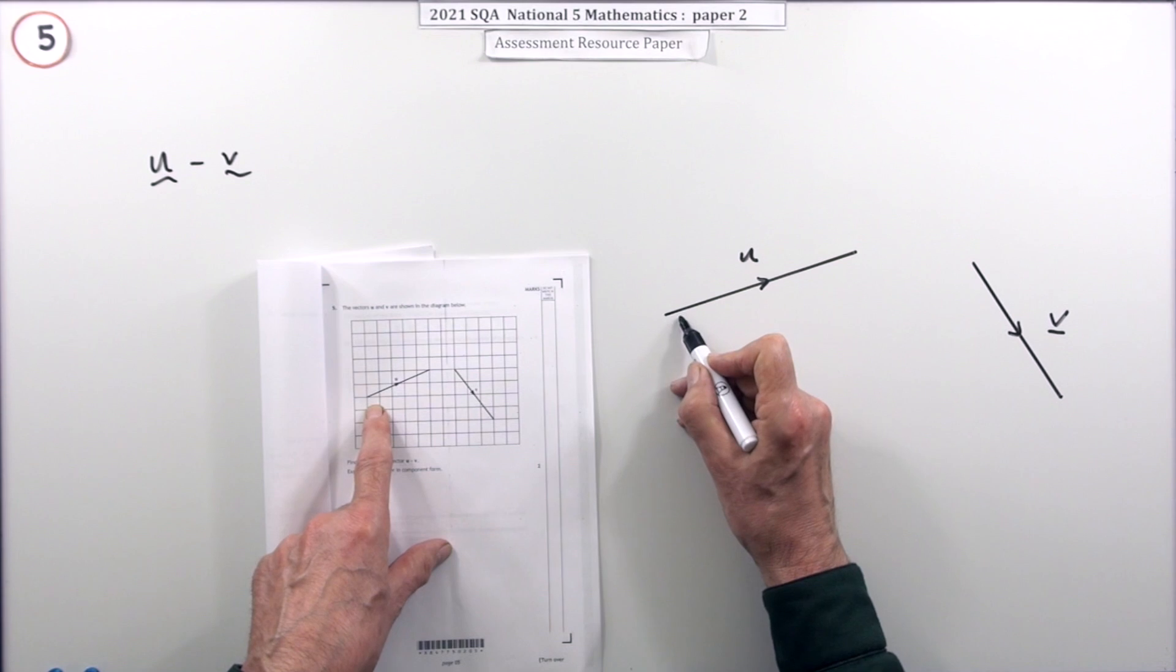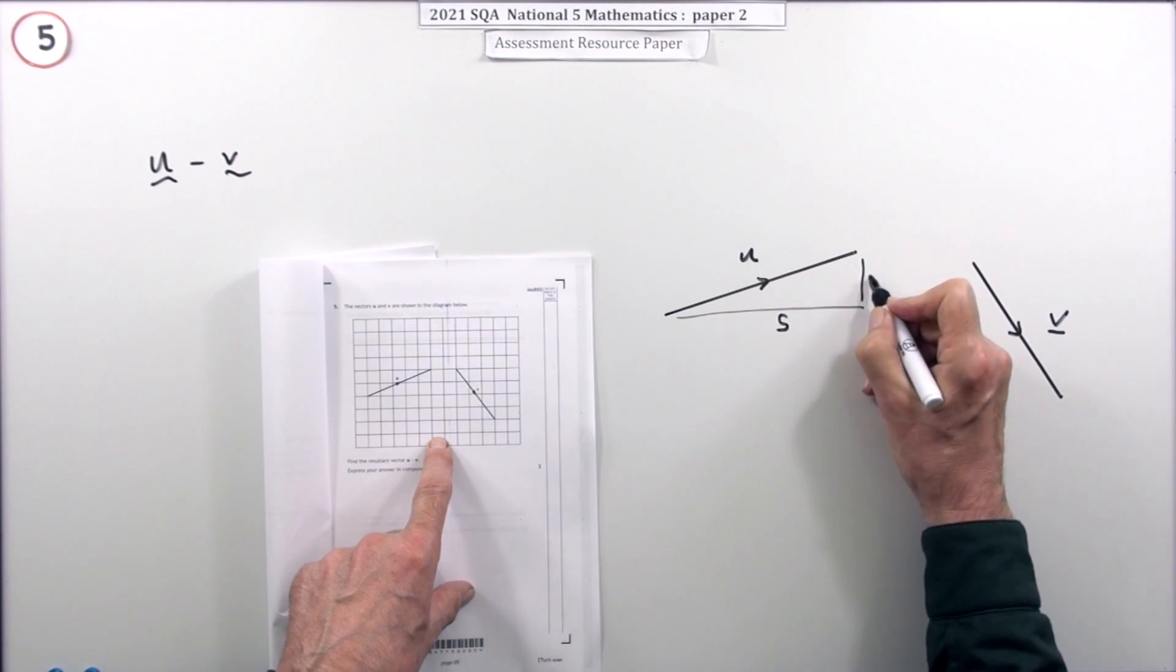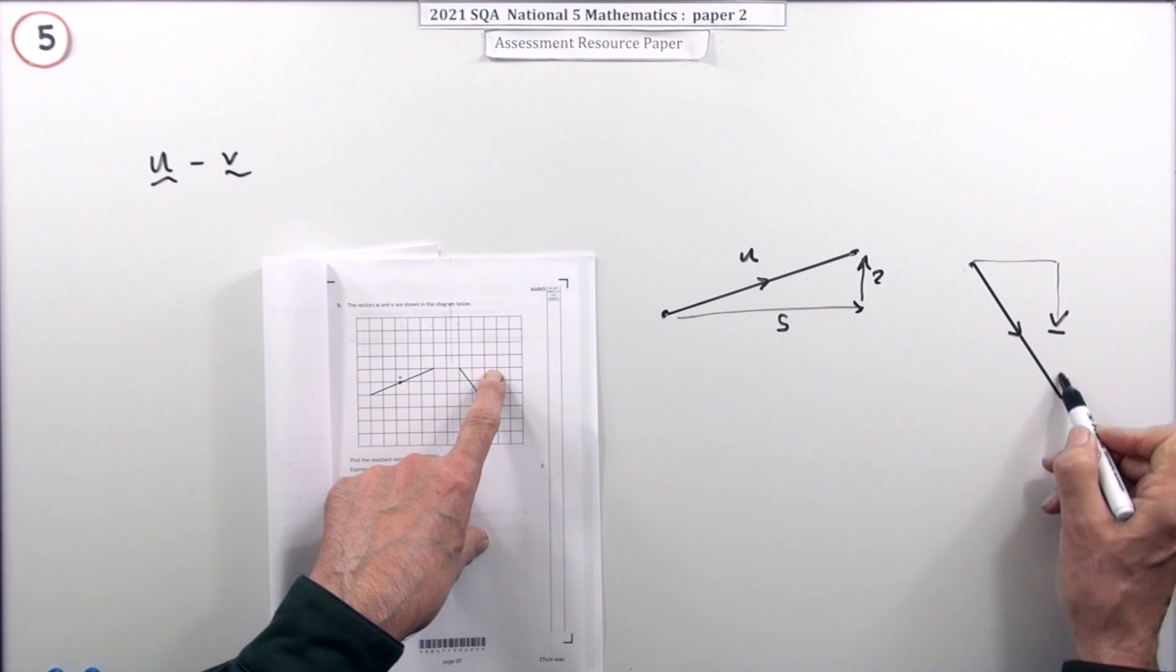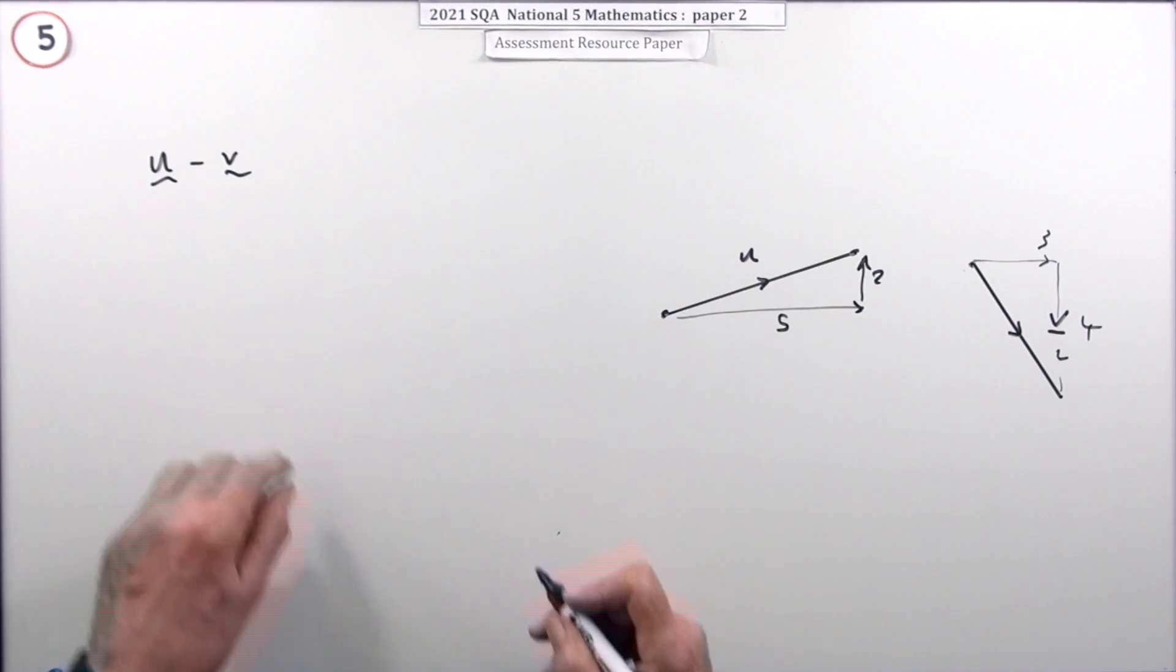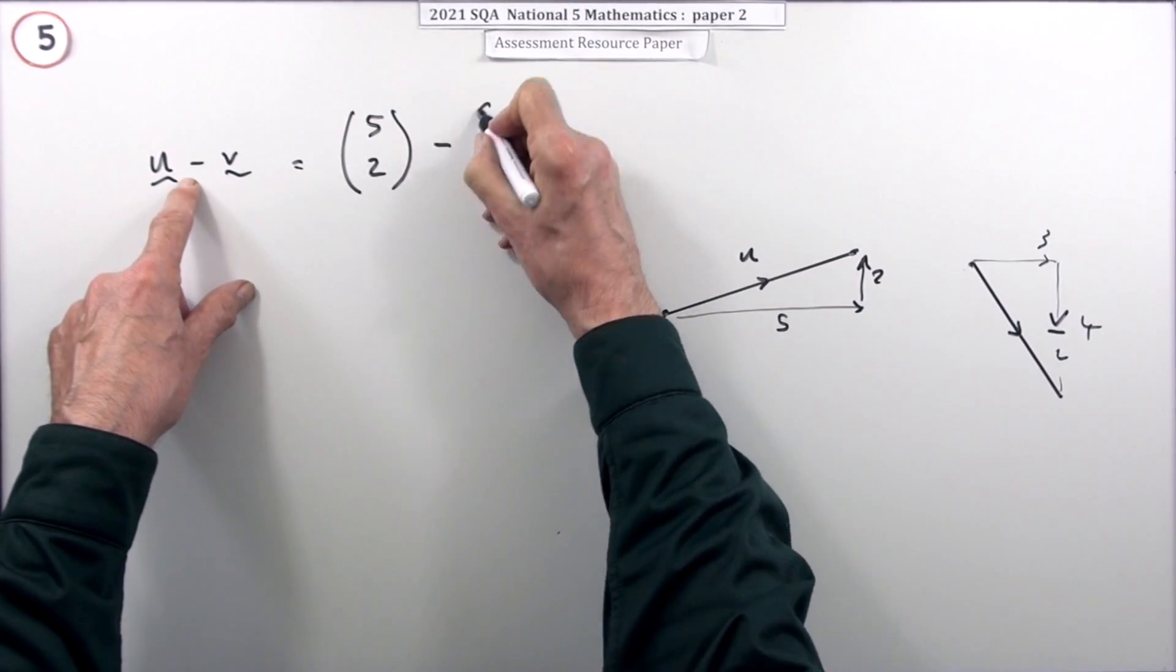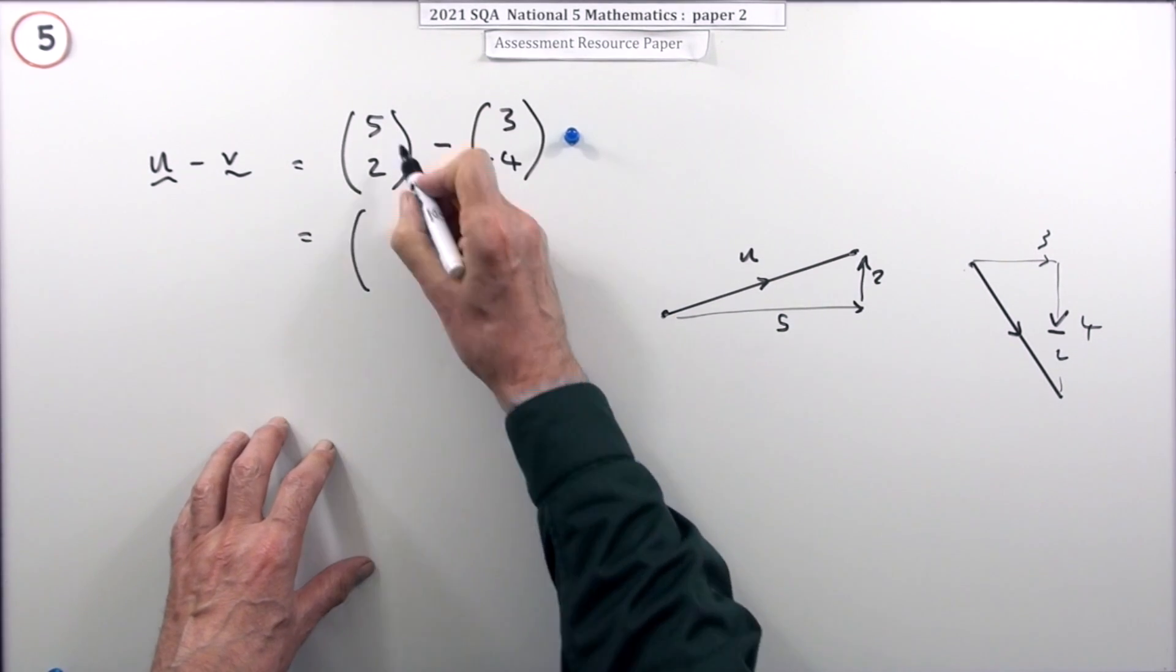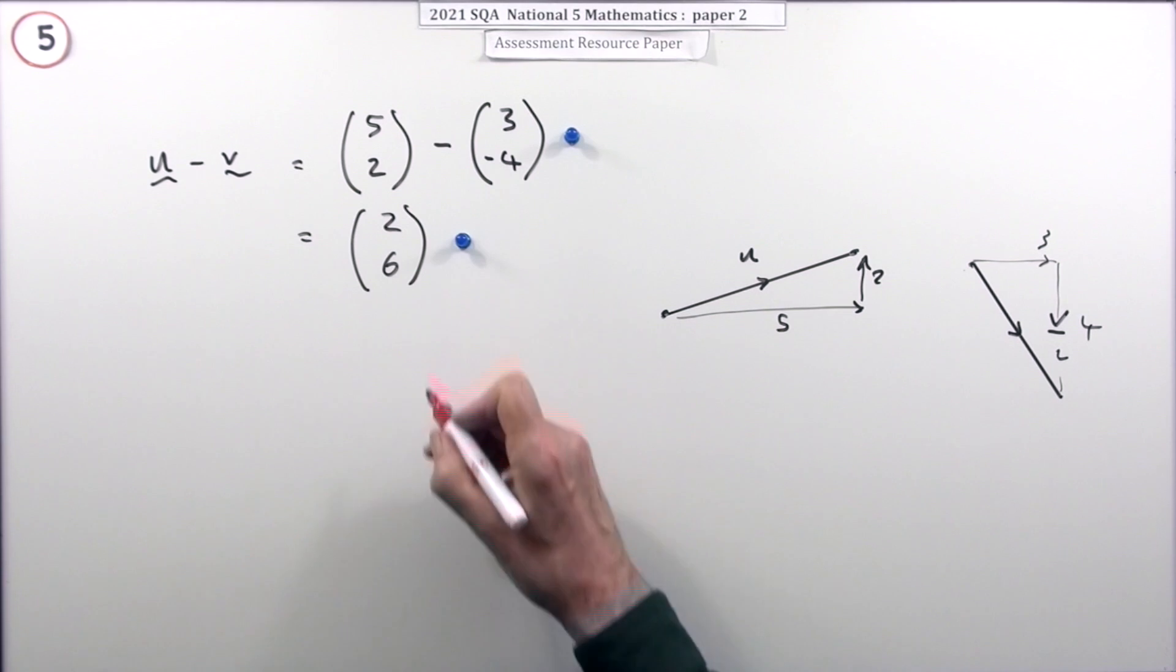Or you could do it by calculation. And if you're doing that, you'd have to count along one, two, three, four, five. So it goes five along and then two up. So from the start to the end of that, it's five along and two up. What does v do? It goes one, two, three along and then it drops down. So it goes three along and it drops down one, two, three, four. Which means that u was, put it in component form, five along, two up. Subtract v, which was three along but four down. So minus four for the y component. Now doing that gets you one of the marks. Now you've just got to subtract them. Five take away three is two, two take away negative, two plus four is six. And that's your answer. It's easy stuff.